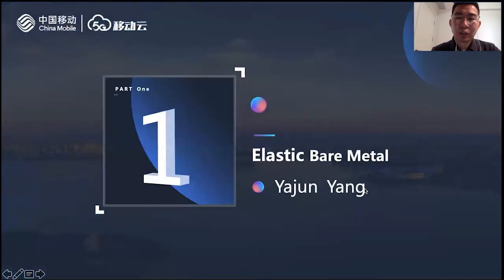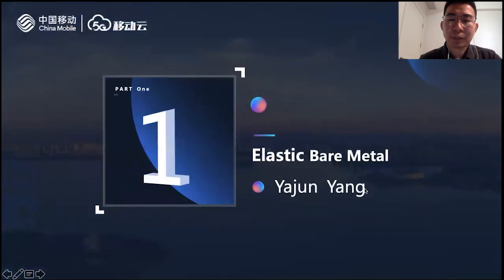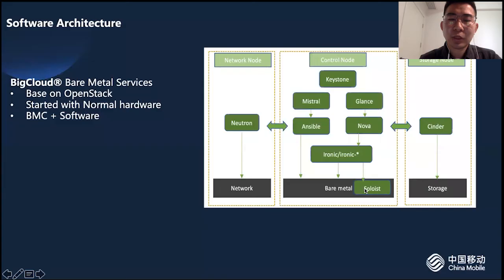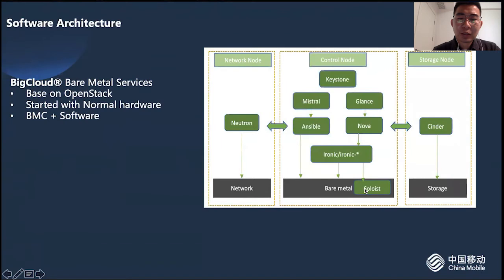First of all, I will introduce our bare metal product, which we call the Elastic BareMetel, because it can provide effects for future instance types like a virtual machine, so that our product can adapt to customer business quickly. Like many OpenStack-based vendors, our bare metal service is built around compute, storage, and network.